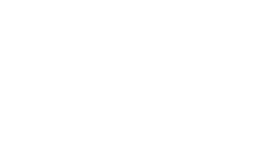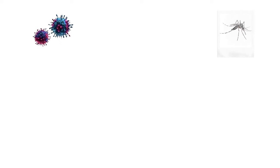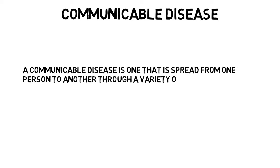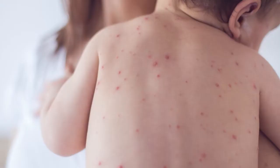Now that we know what causes communicable diseases, let us discuss what a communicable disease is. A communicable disease is one that is spread from one person to another through a variety of ways, including contact with blood and bodily fluids, breathing in an airborne virus, or being bitten by an insect.